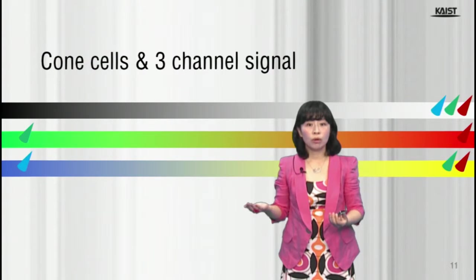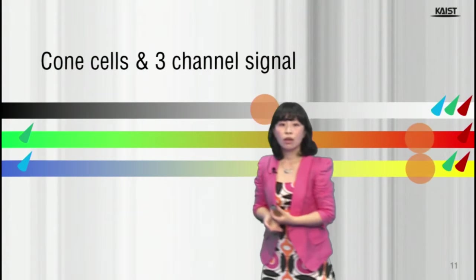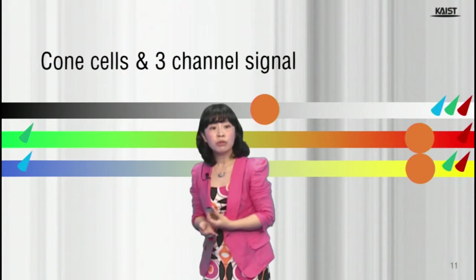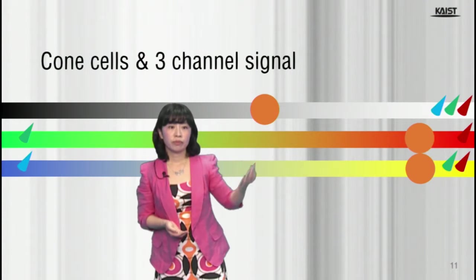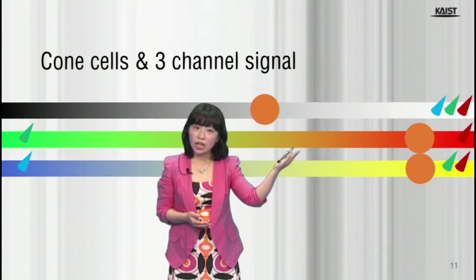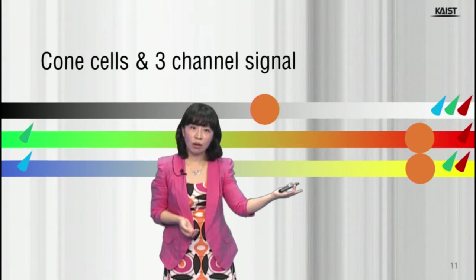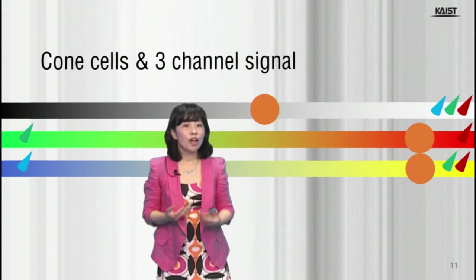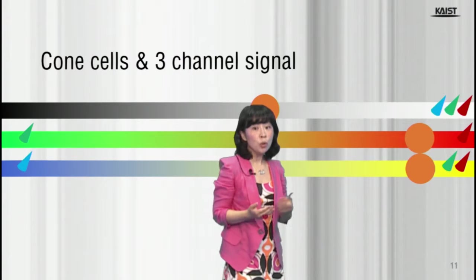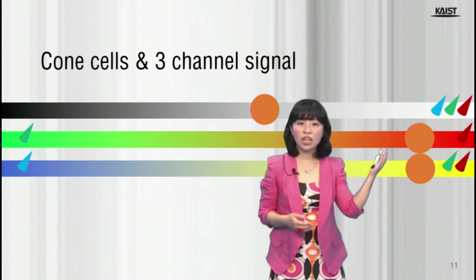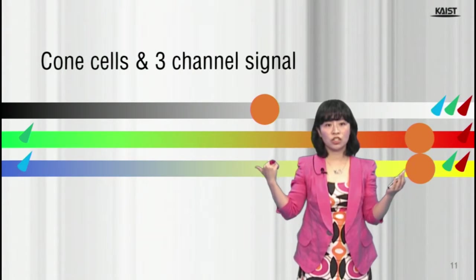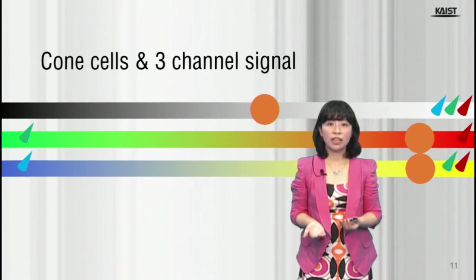For example, red and yellow signal will result in orange. Orange is indeed reddish and at the same time yellowish. Now you understand that there is no such thing like reddish and at the same time greenish. It is physiologically not possible.